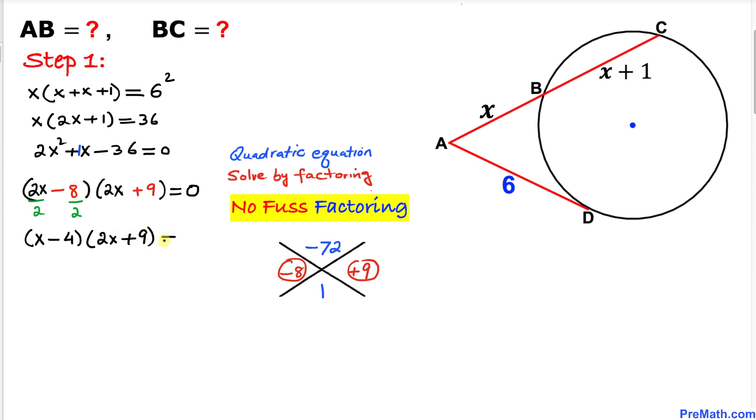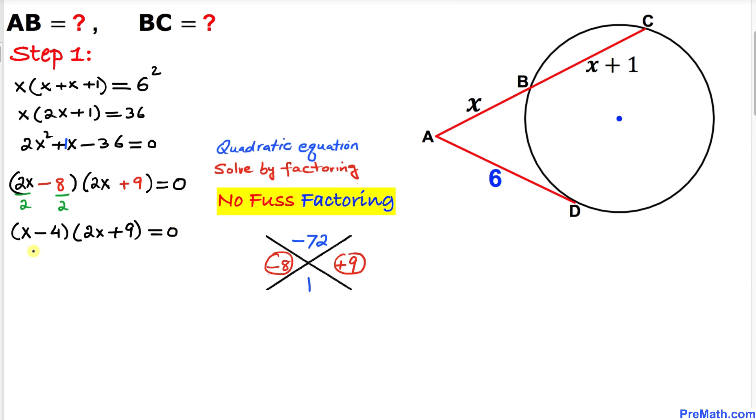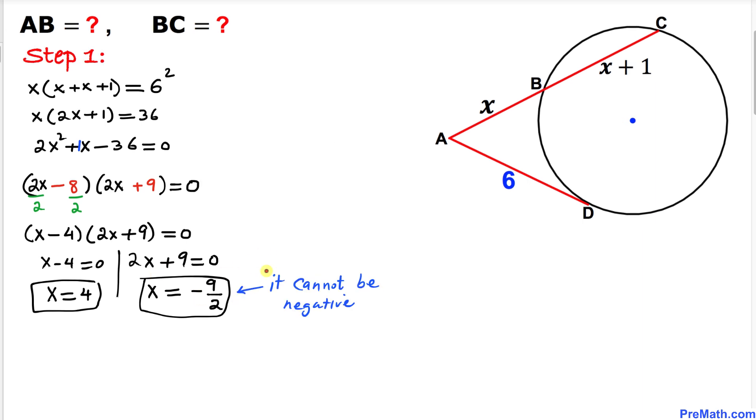x equals positive 4, and on this side, x equals negative 9 divided by 2. Since x represents side length, it must be positive, so this cannot be negative. Therefore, our only accepted value is x equals positive 4.